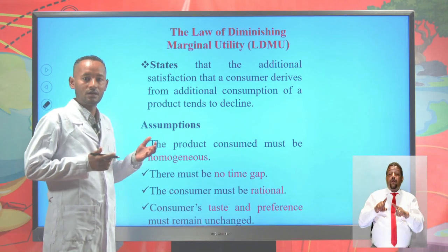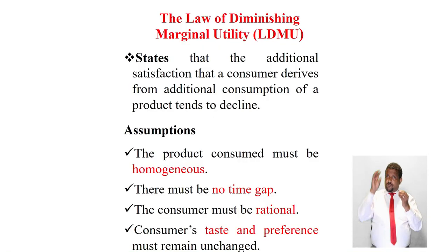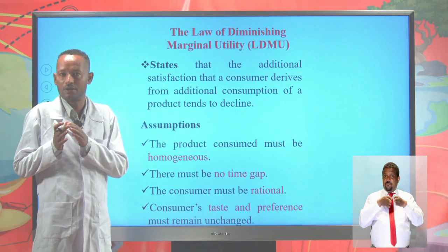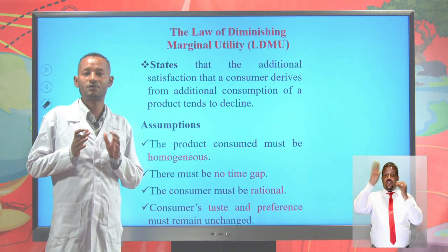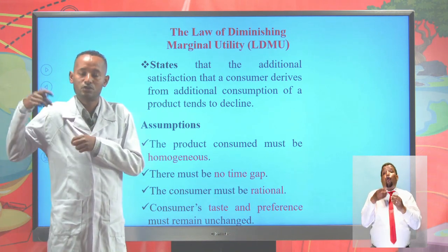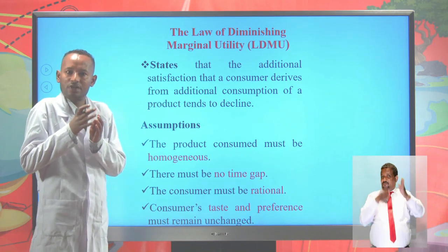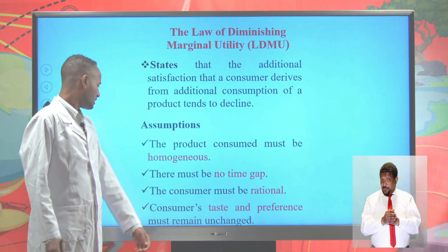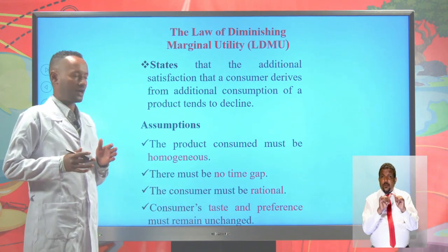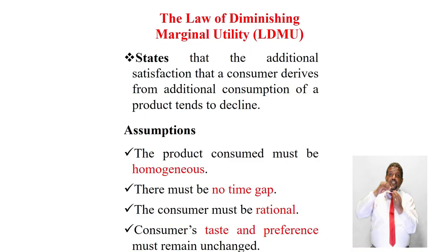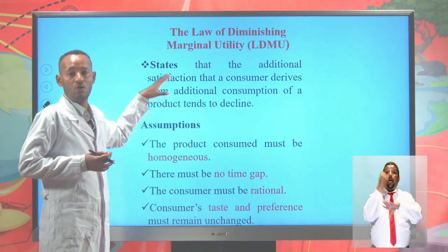If we consume heterogeneous products, then the additional satisfaction from additional consumption will not decline. The third assumption is there must be no time gap between consumption of different units of a commodity. If there is a time gap, the law is not applicable. For example, if you eat the first banana today and the second banana tomorrow, there is enough time gap; hence, the additional satisfaction will not decline. The fourth assumption is the consumer's taste and preference must remain unchanged. These are the four assumptions for the law of diminishing marginal utility.